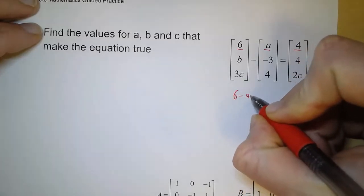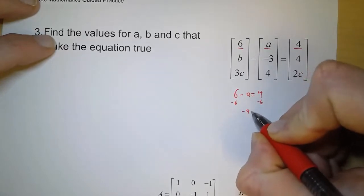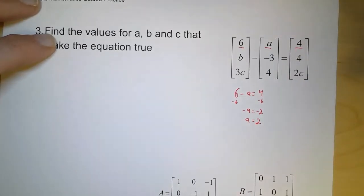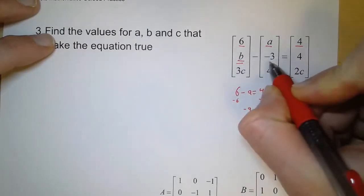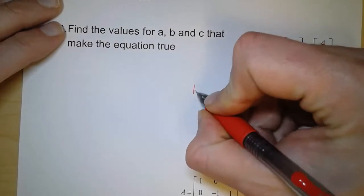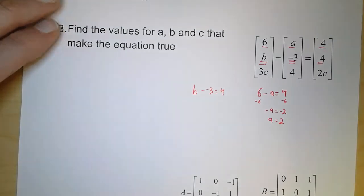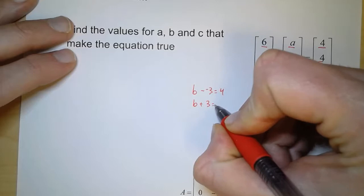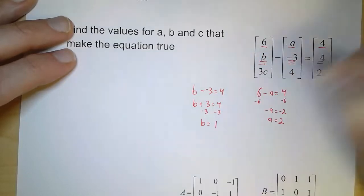So 6 minus a equals 4. If I subtract 6, that means negative a equals negative 2, so that means a equals positive 2. Let's look at the second line. Here we've got b minus negative 3 equals 4. So b minus negative 3 is equal to 4. Now that's the same as saying b plus 3 equals 4. So if we subtract 3, that means we get b equal to 1.